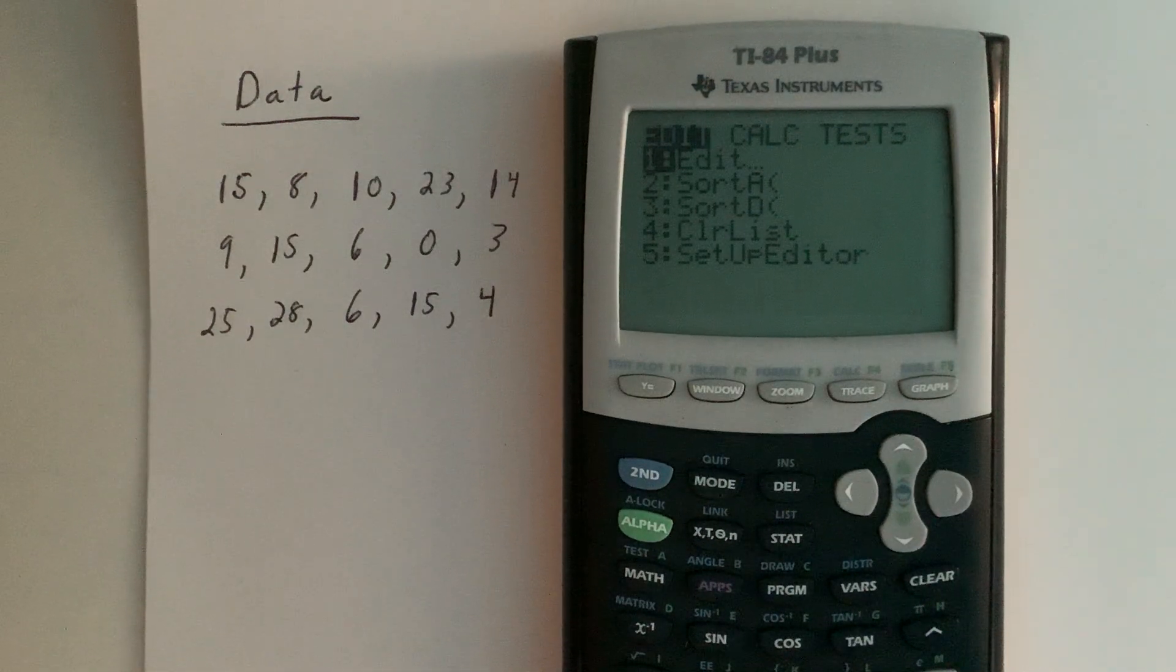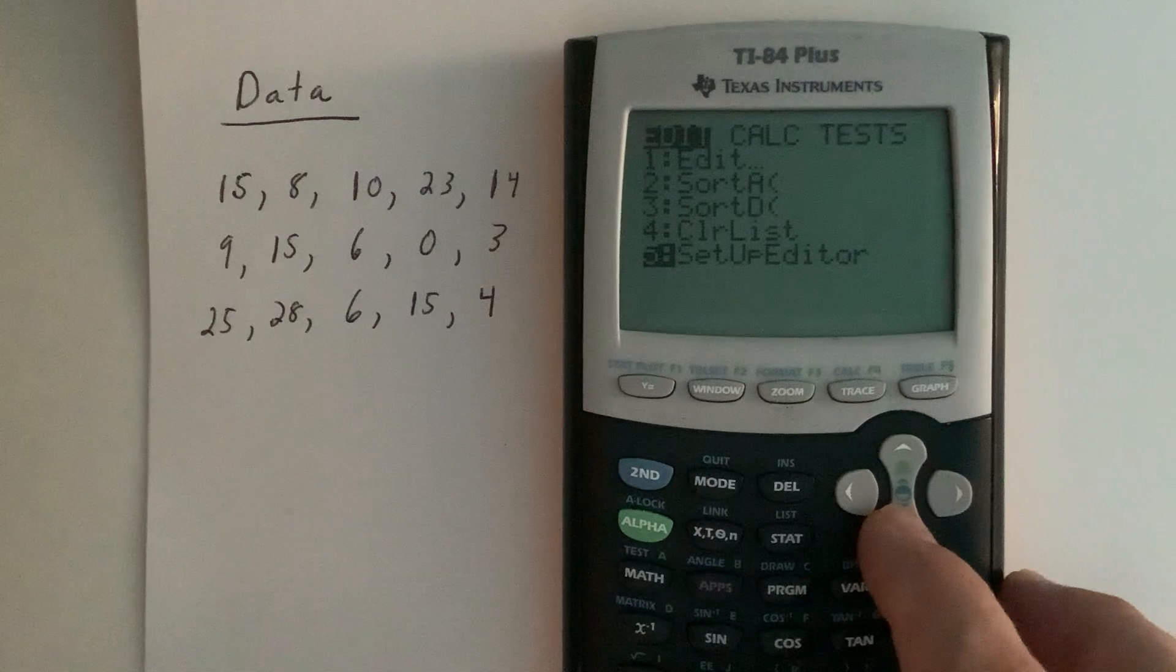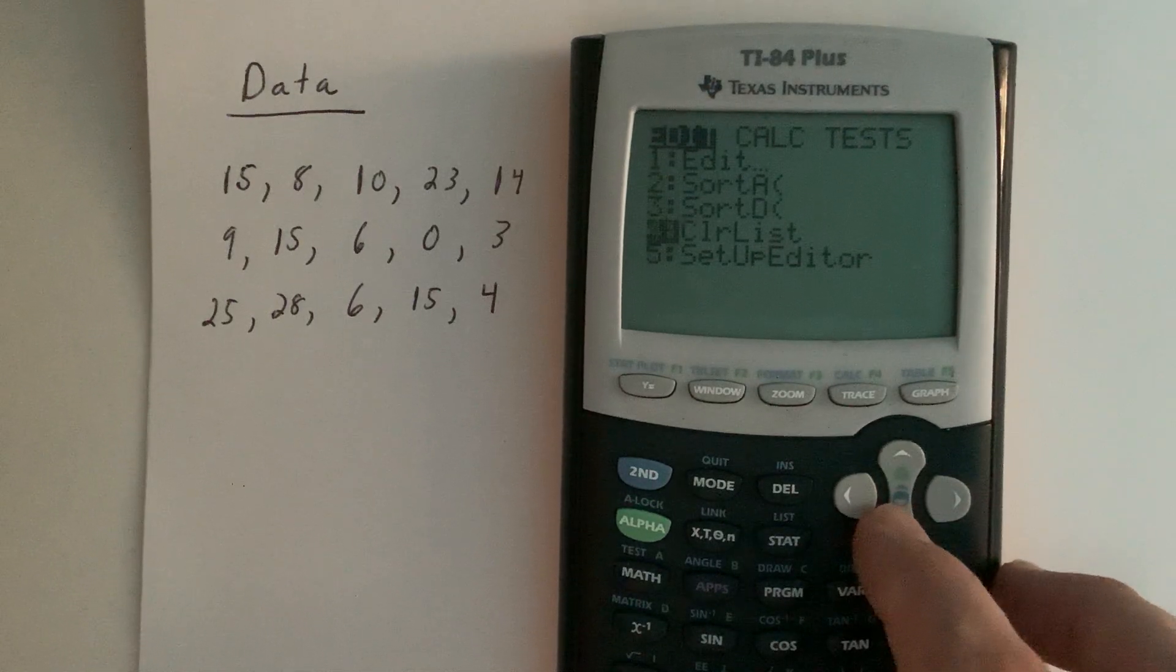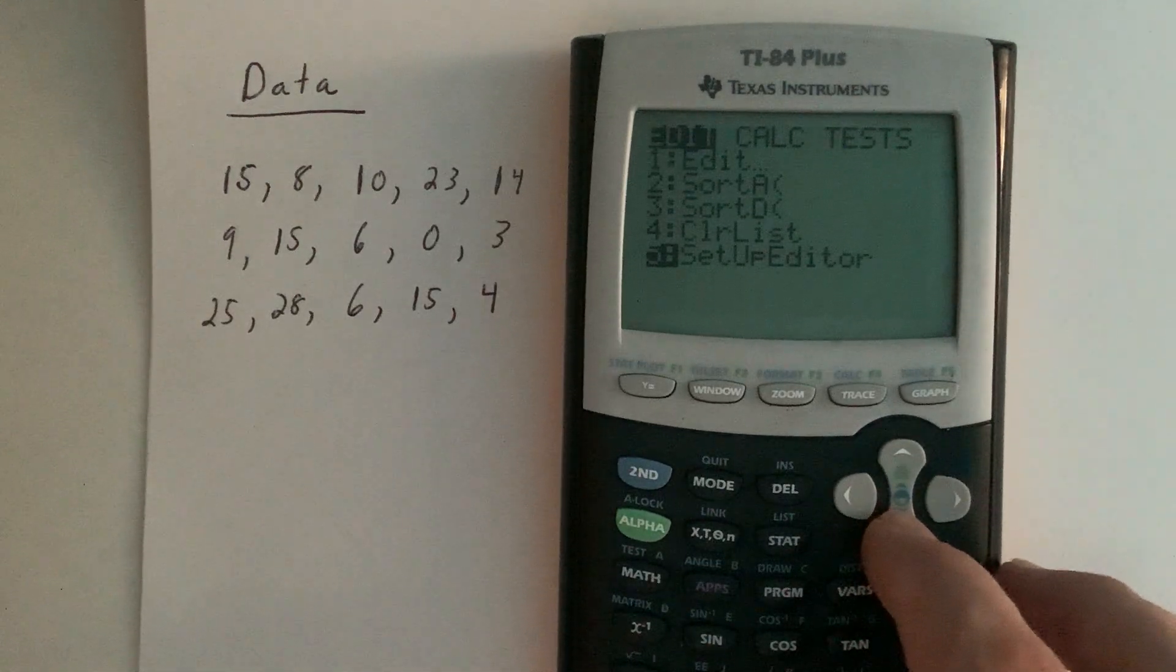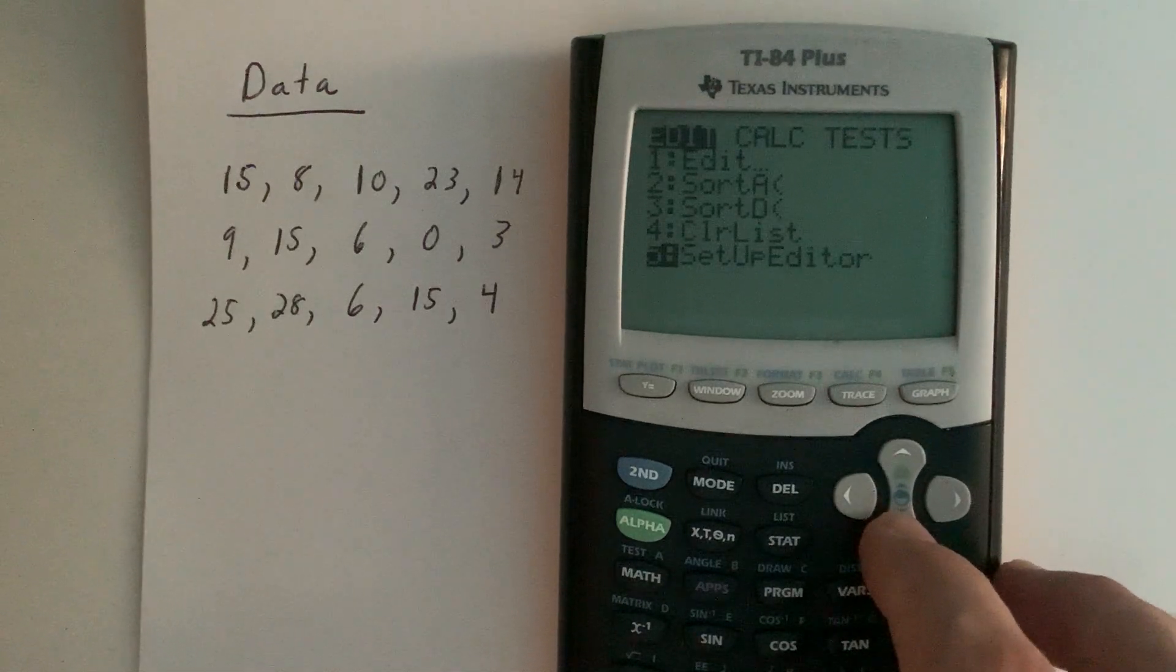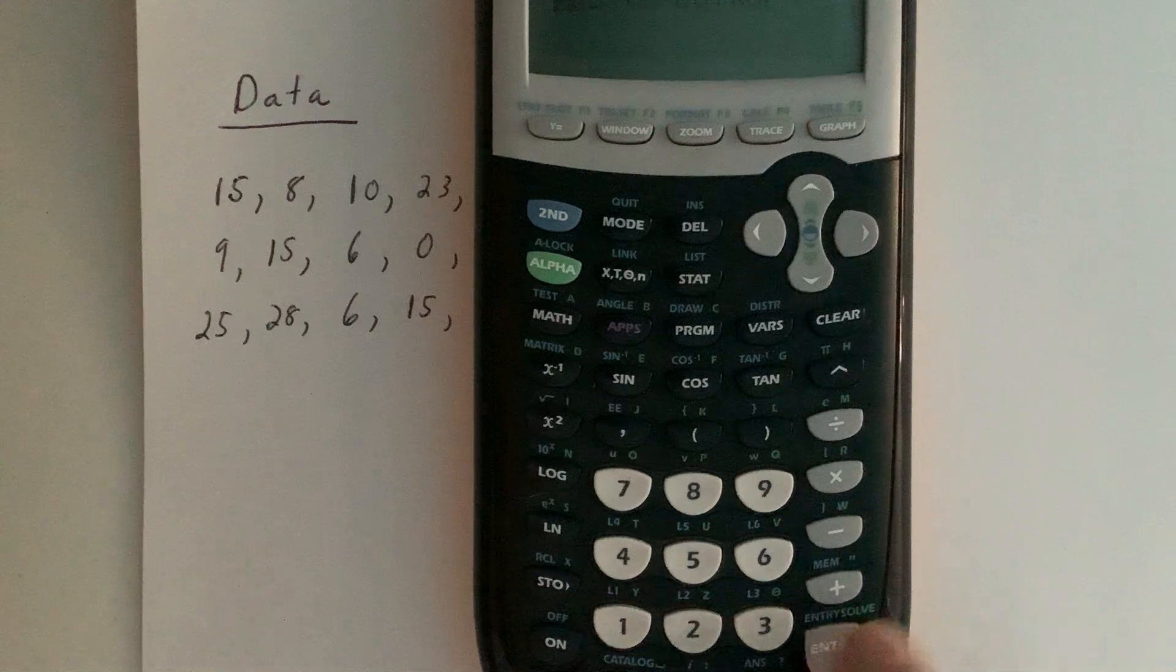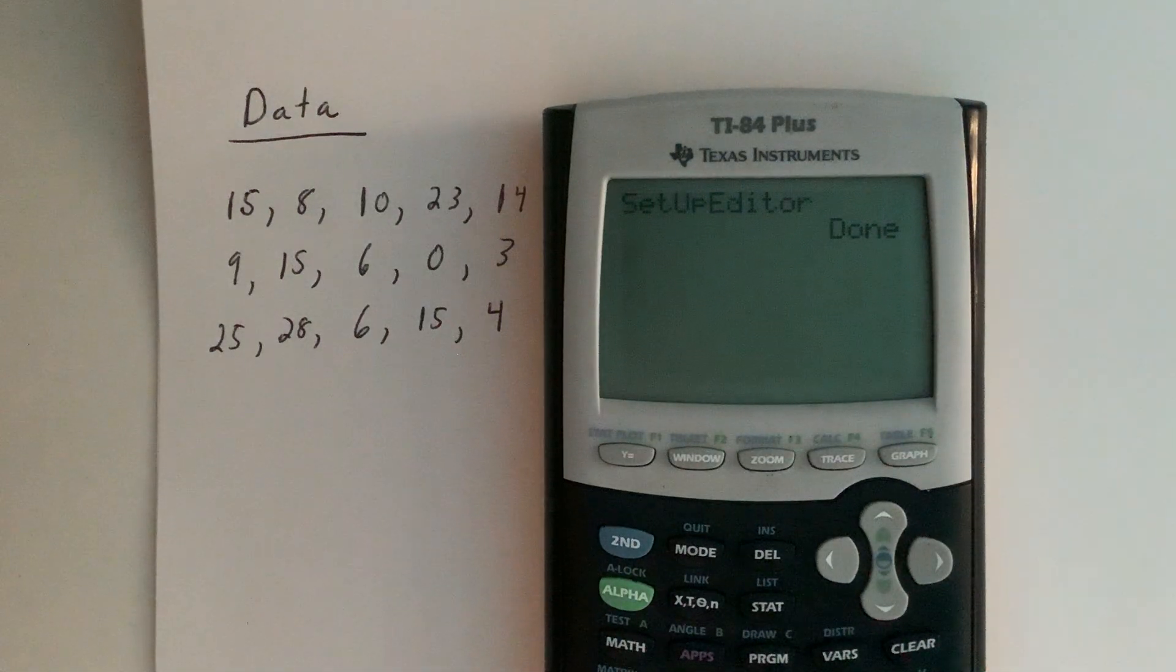What I want to call your attention to here is edit, which is how we're actually going to input data, and also setup editor. If at any time your calculator seems to be malfunctioning, something goes wrong with your list, or you just want to restore everything to their default setting, you can run the setup editor. Put your cursor on setup editor, hit enter, it'll say setup editor, hit enter again, and it'll say done. That basically resets the lists to their default setting.